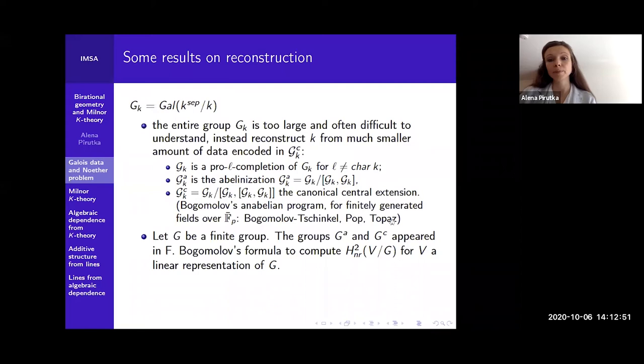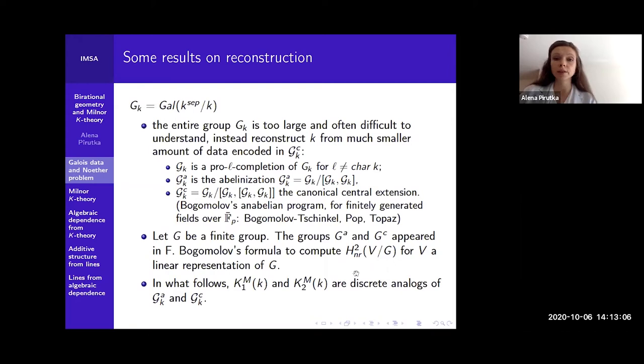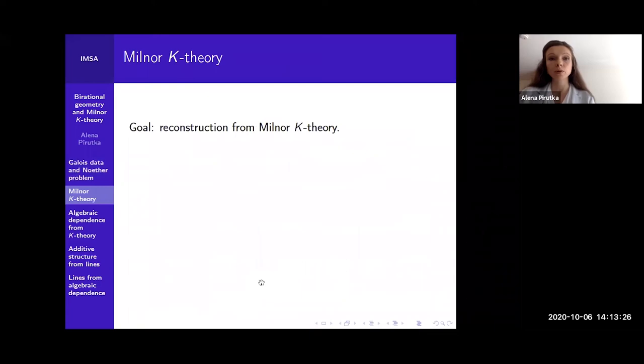This provides a connection to the setting where you have G_A and G_C to other problems in rationality and other invariants. Why is it important for us? Because we will be interested in the reconstruction from K-theory, and K1 and K2 can be viewed as discrete analogs of G_A and G_C. So let me now introduce the context of Milner K-theory and reconstruction from it.